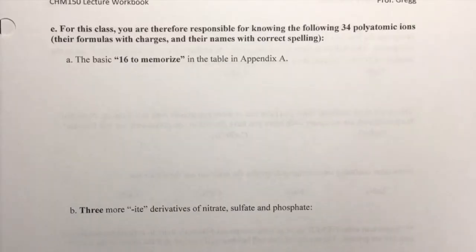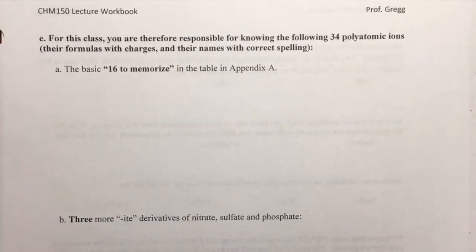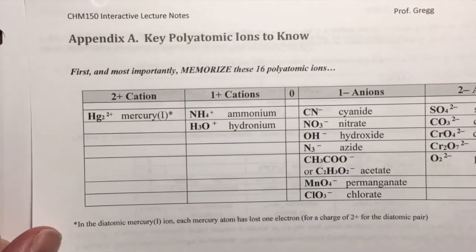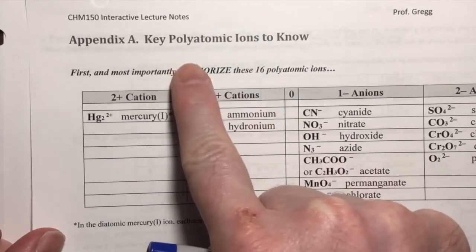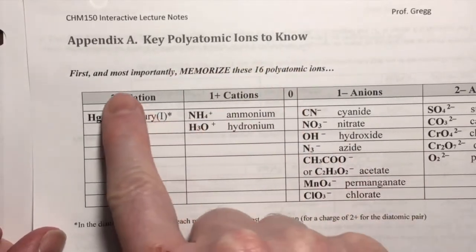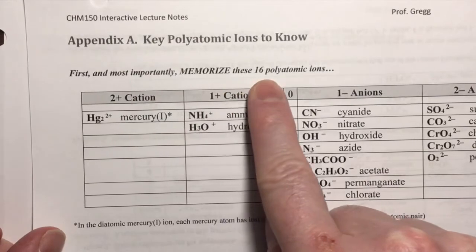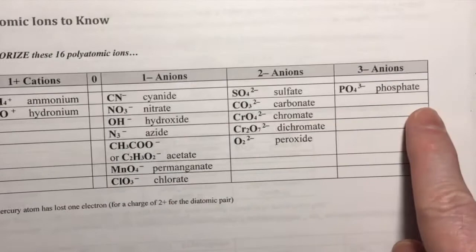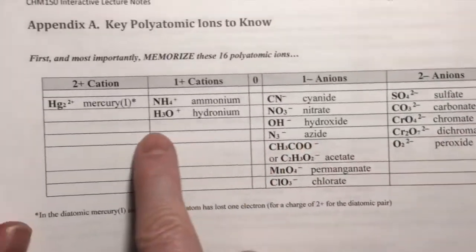Hello students. In this video, I would like to bring all of the polyatomic ions that we need to know for this class together in one master list. Here we go. The basic 16 that we have to memorize are on this page in the appendix. Key polyatomic ions to know - memorize these 16 polyatomic ions. So the ions that are on this list are the ones we have to memorize.